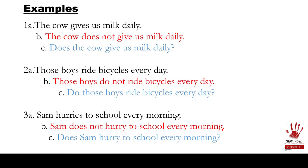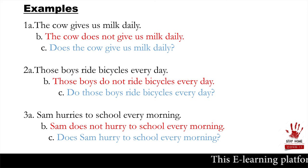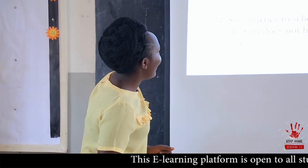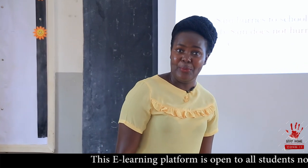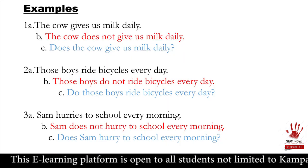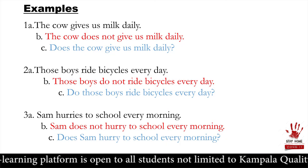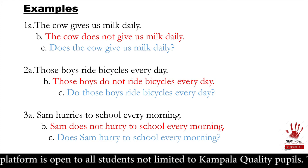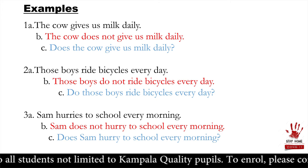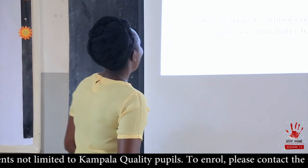Now we are changing to interrogative — a questioning sentence ending with a question mark. We are talking about many boys, so we use 'do.' Begin with the helping verb: 'Do those boys ride bicycles every day?' I want to know, I'm asking: 'Do those boys ride bicycles every day?' Tell me.